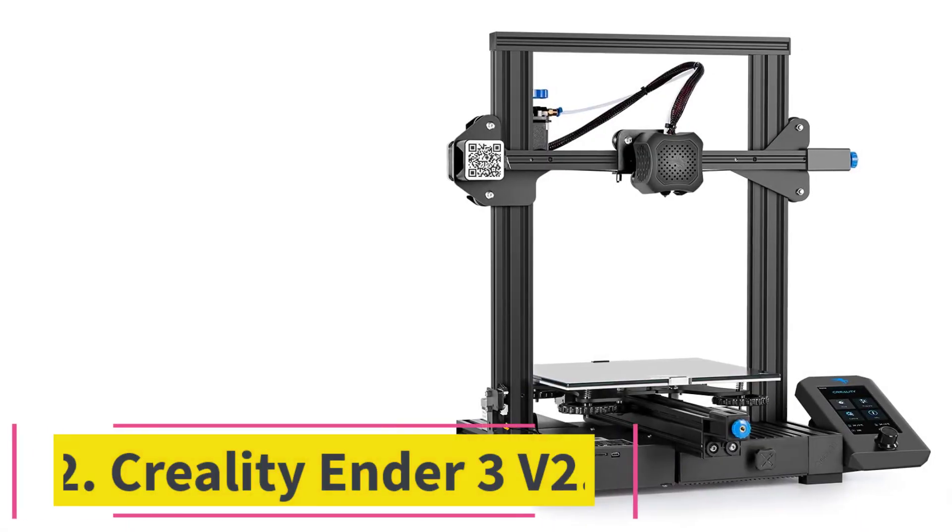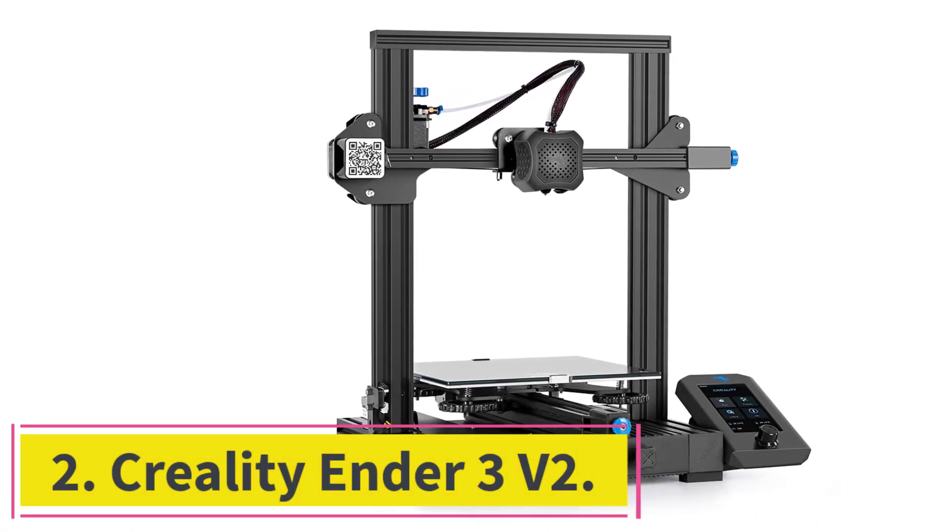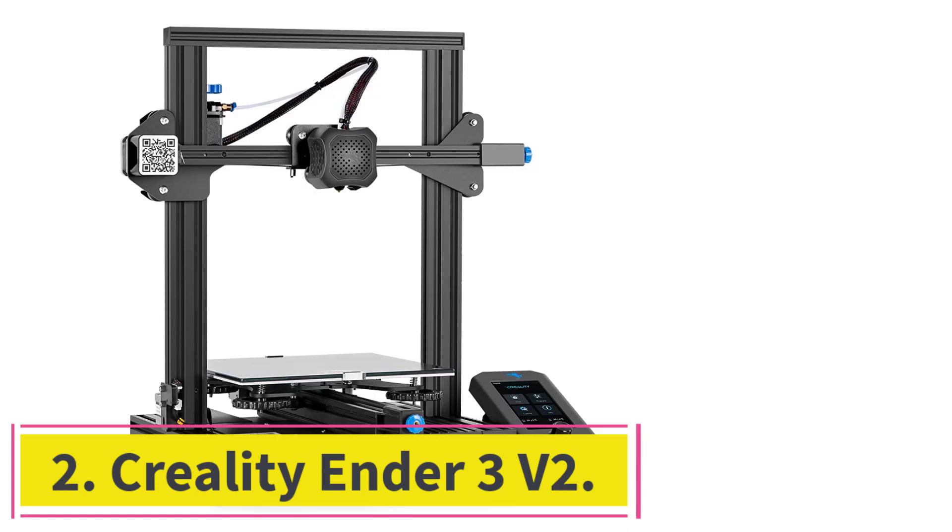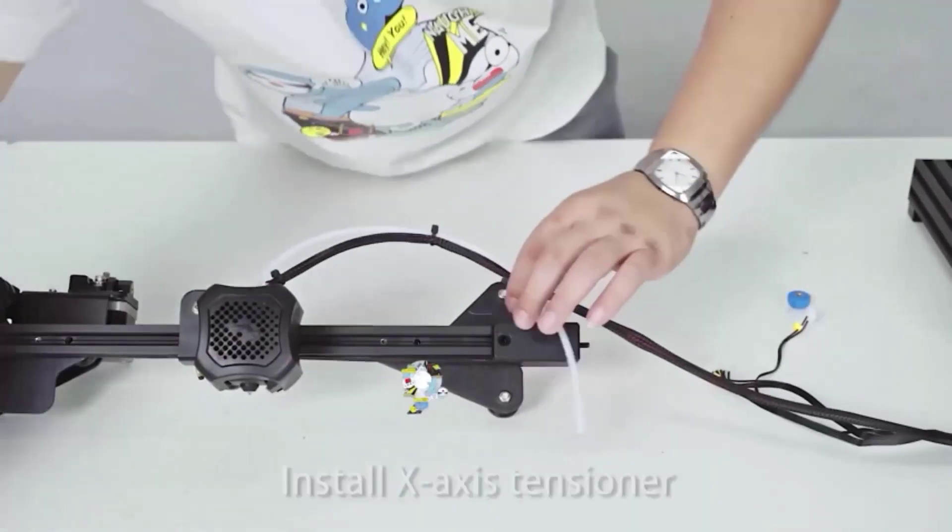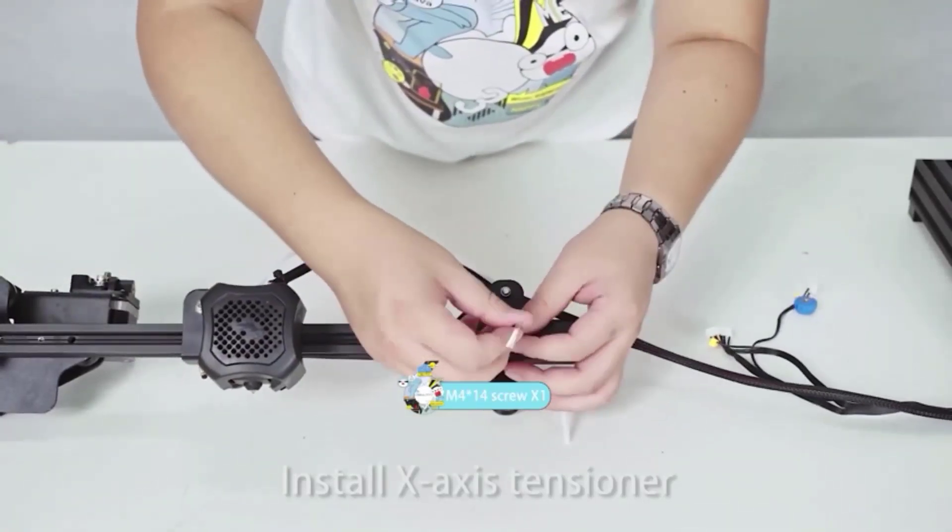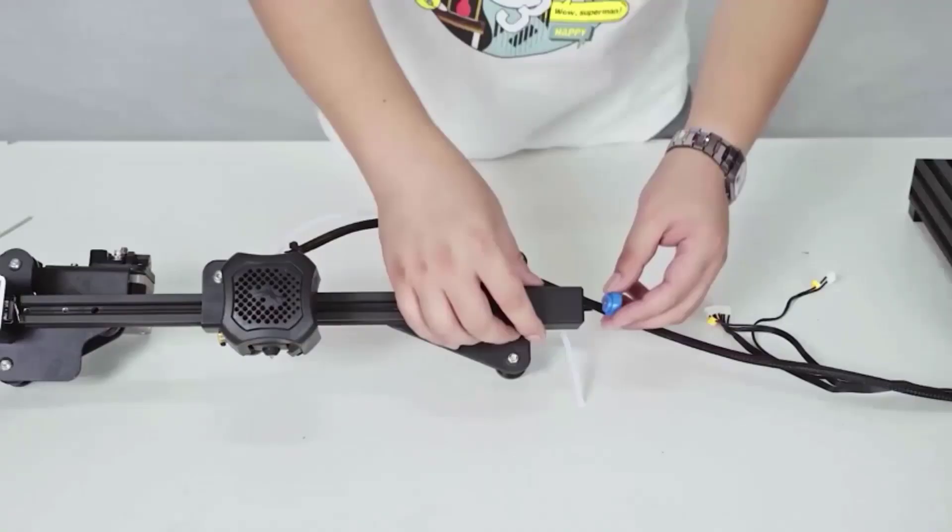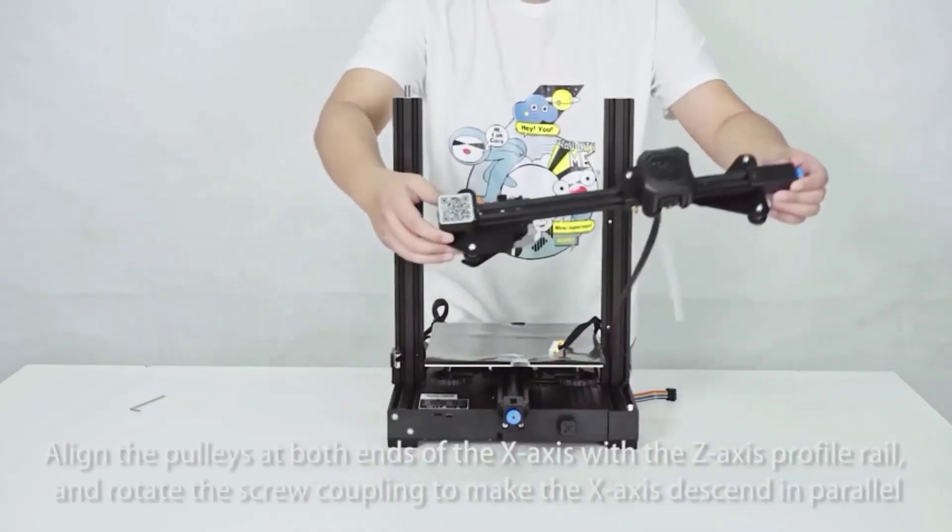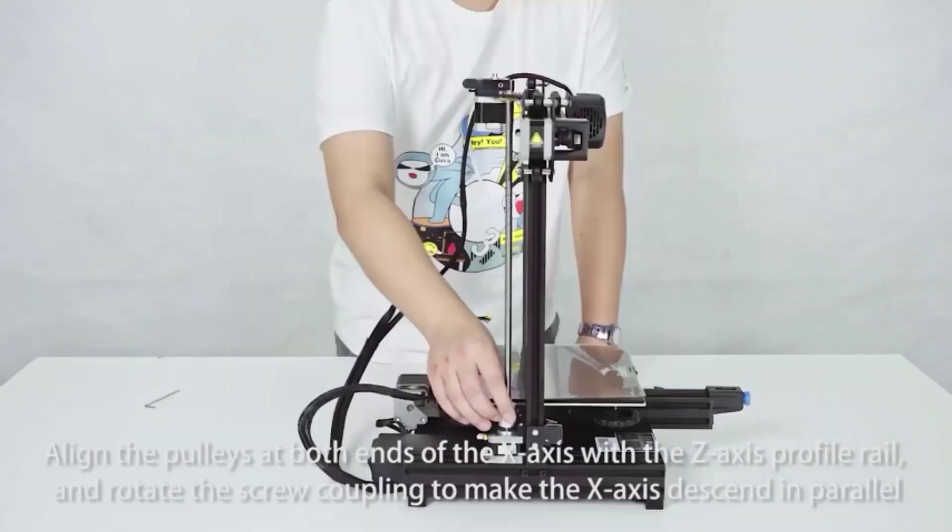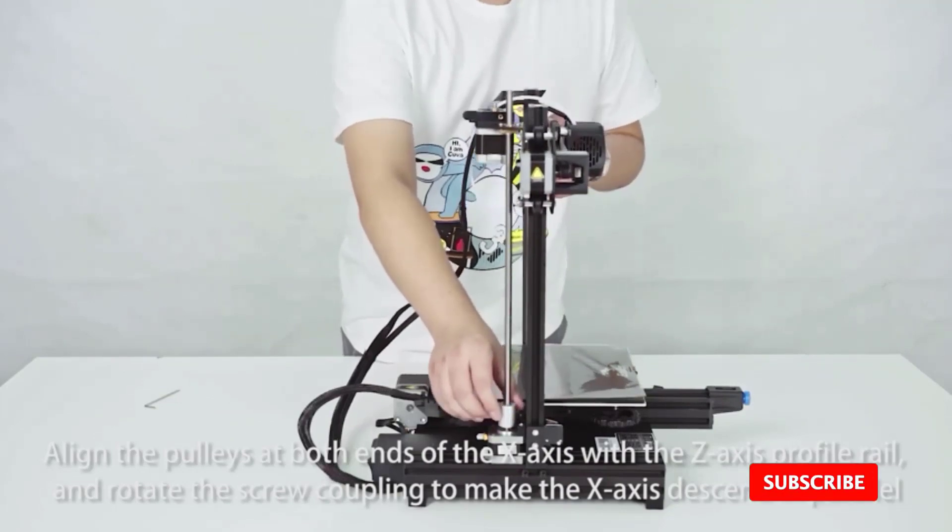At number 2, Creality Ender 3v2. Building on the success of the Ender 3 and improving and fixing its few flaws, the Ender 3v2, while the same size build volume, is a much-enhanced DIY 3D printer. The upgraded motherboard makes the printer quieter than ever, and the extra power makes for a much more stable and precise printing experience.